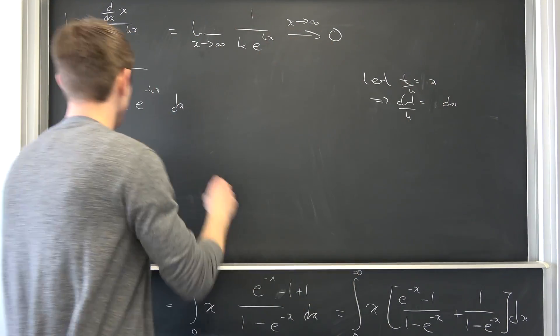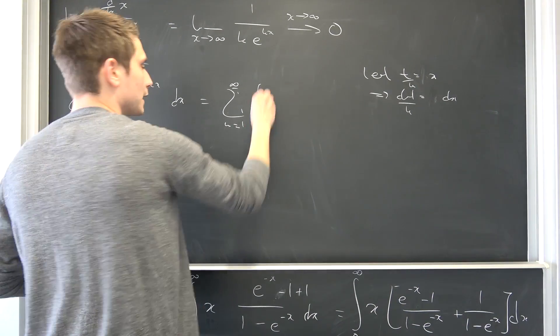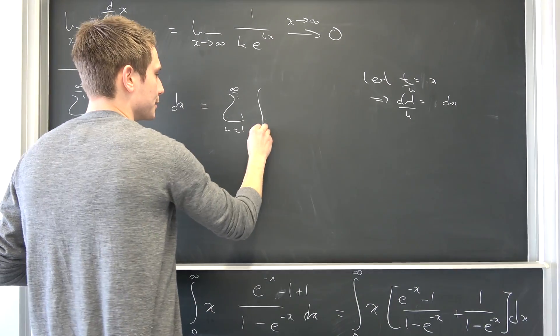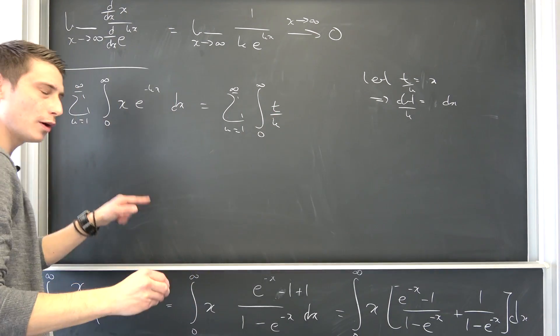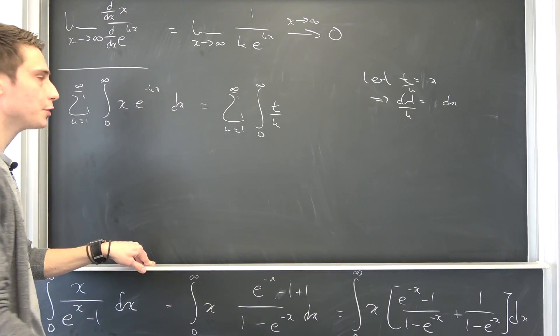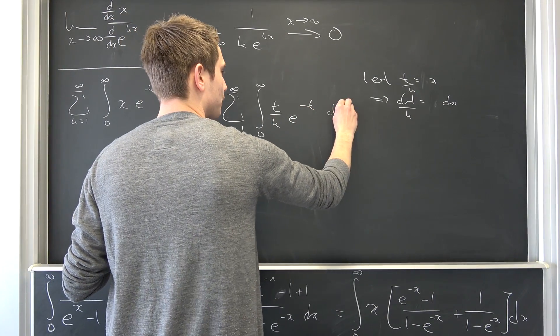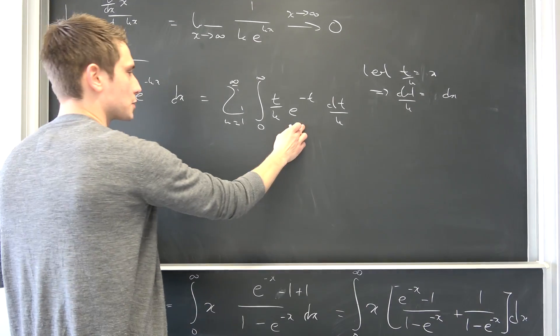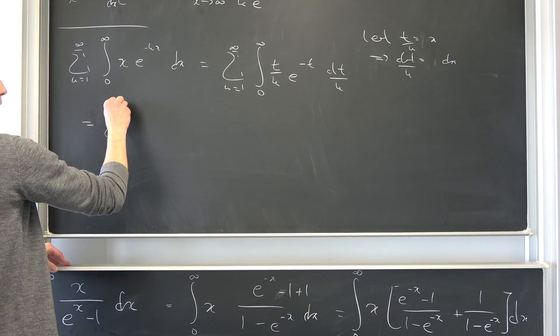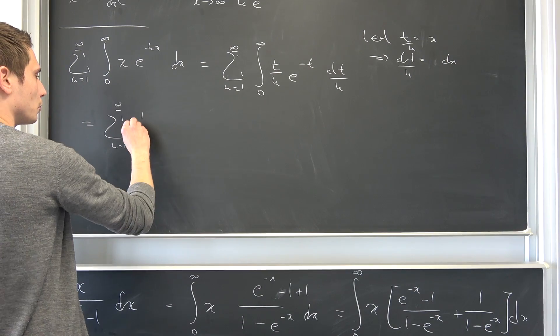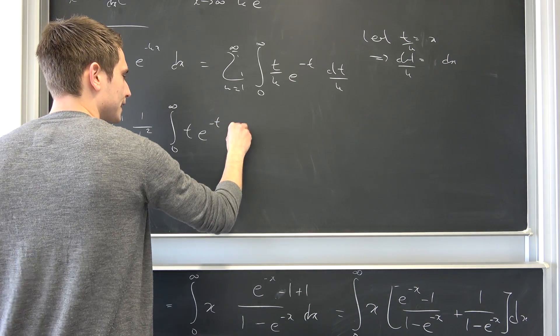We can plug this stuff into here actually. So we have the sum right here from 1 to infinity. Applying our upper and lower bounds still goes from 0 to infinity, and then we have t over k times e to the negative t power, and then we have dt over k. So we have this 1 over k squared term, just like we did with integration by parts. I hope that's not boring. I just want to clarify what I said before. 1 over k squared, then integral from 0 to infinity of t times e to the negative t dt.